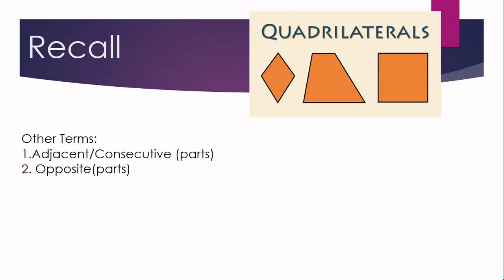Terminologies such as adjacent or consecutive have the same meaning, and we also have opposite. When you say adjacent or consecutive — from the word itself, consecutive means magkasunod (next to each other). If you say opposite parts, ibig sabihin hindi magkasunod (they are not next to each other). These are the consecutive sides, and there are four pairs of adjacent sides.